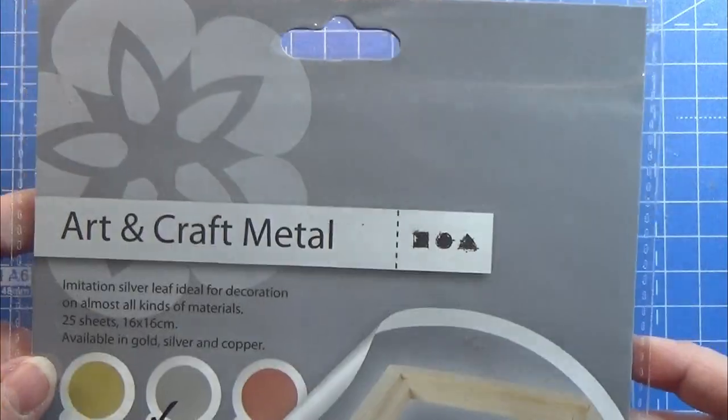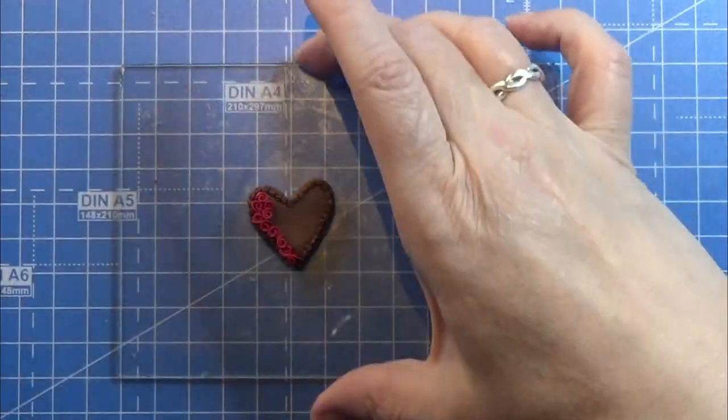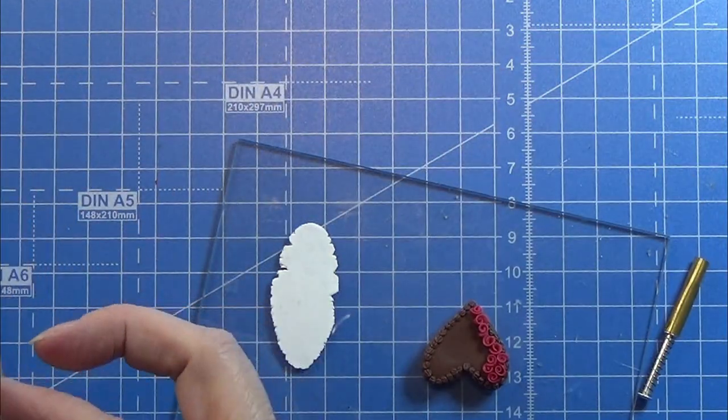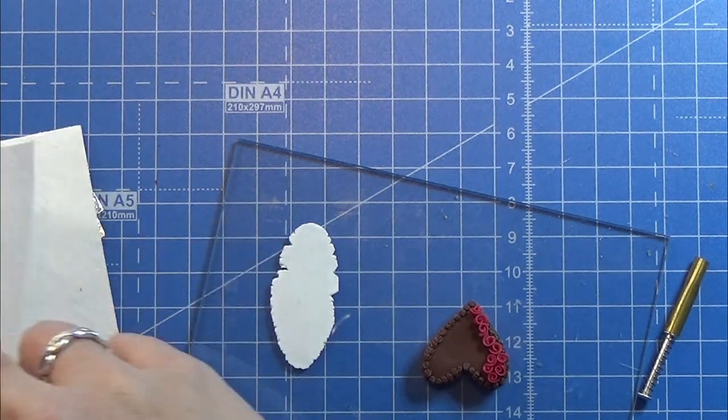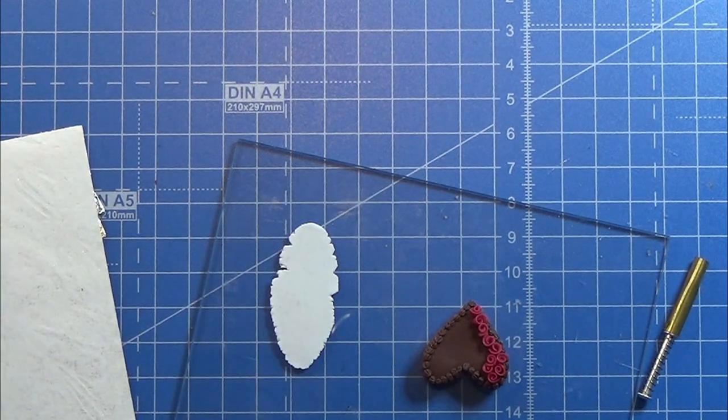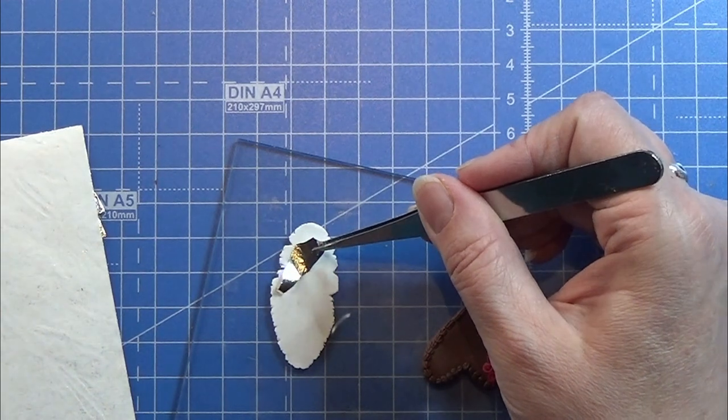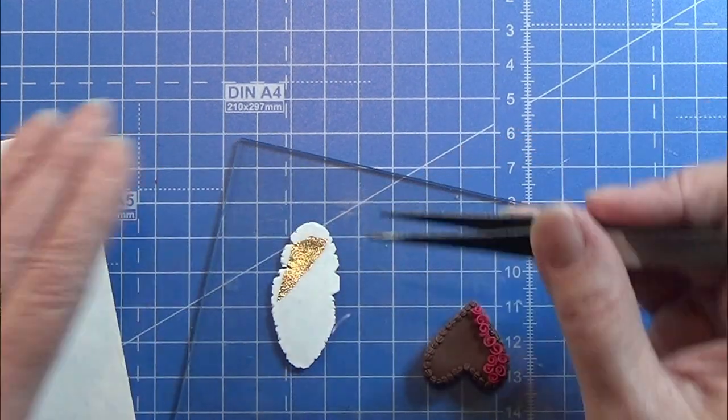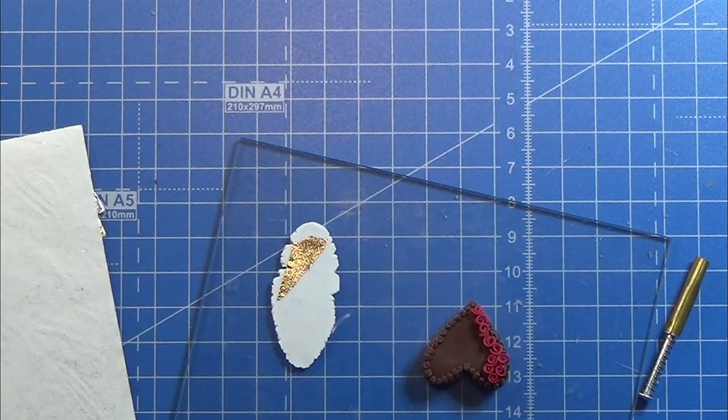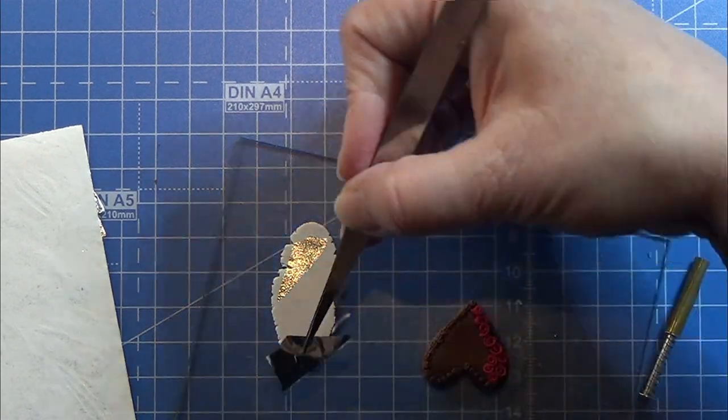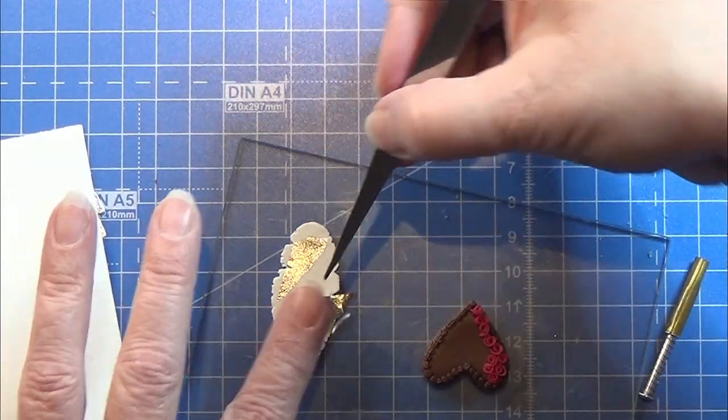I have this leaf silver that I'm going to place on a piece of white clay that I rolled out on my pasta machine on the thinnest setting. I'm placing it on there and pushing it into the clay just like that.